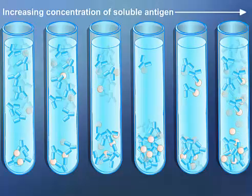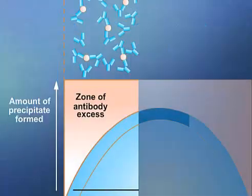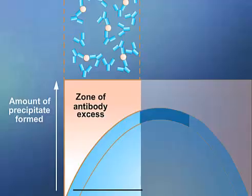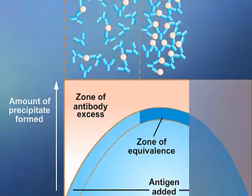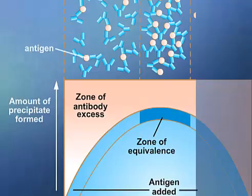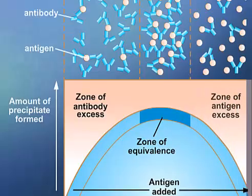If more antigen is added, smaller complexes and therefore less precipitate is formed. A graph of the amount of precipitate formed versus the amount of antigen added shows the amount of precipitate increasing until the zone of equivalence is reached. As the amount of antigen added becomes in excess of the antibody, the amount of precipitate decreases.